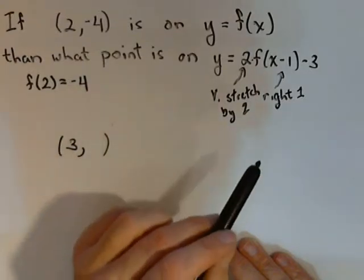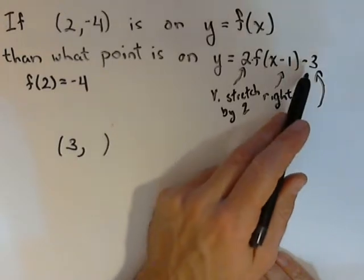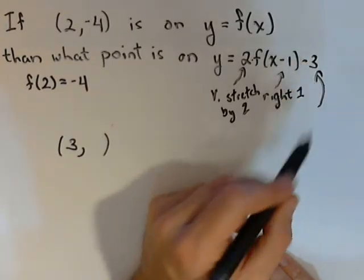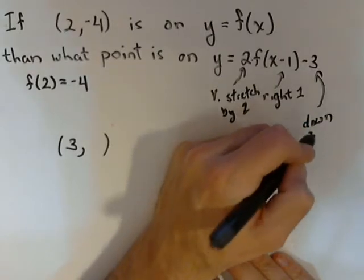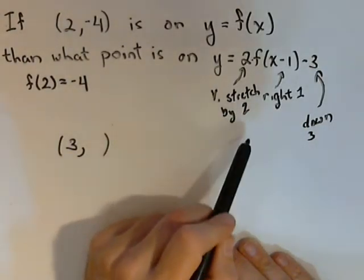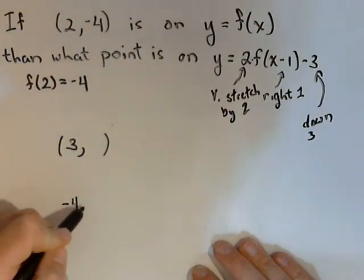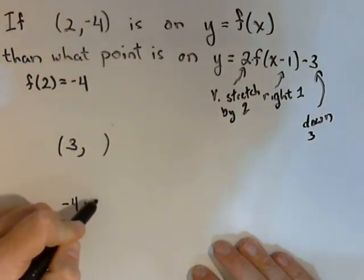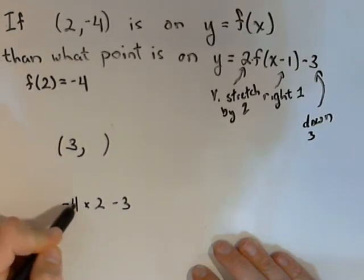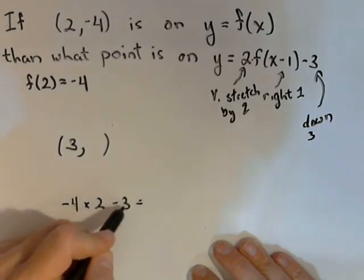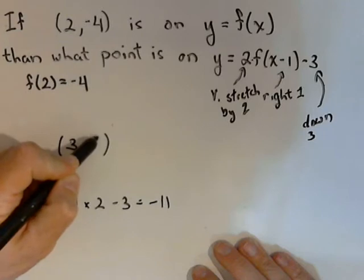But we have one more vertical transformation, and that's this negative 3 here at the end. So what that's doing is it's going to subtract 3 off of all our y-values, so it's going to go down by 3. So we've got two things going on with our y-value. So we're taking the negative 4, and we're stretching it by 2, and then we're moving it down 3. So negative 4 times 2 is negative 8, minus 3 is negative 11, and there's our new y-value.